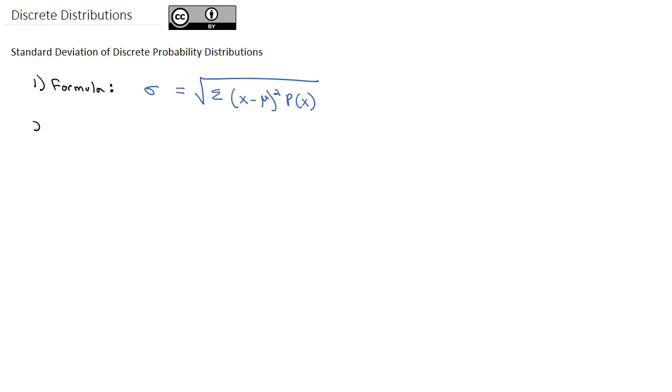For example, we've been working with the number of classes a student attends in a day. The individual numbers were zero classes, one class, two classes, or three classes.